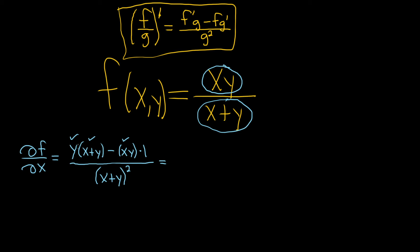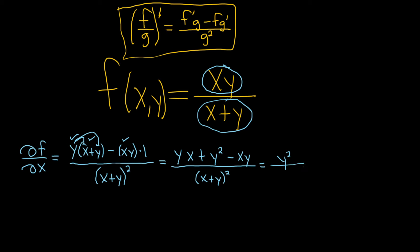Distributing y: y times x gives yx, plus y times y gives y squared, and then minus xy. That's all over (x + y) squared. The xy terms cancel, leaving y squared over (x + y) squared, and that is the final answer for ∂f/∂x.